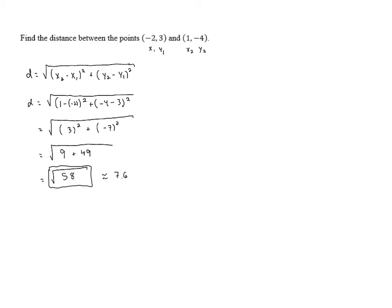Of course, the distance is greater than that. I'm just making up something on the fly. But our brains can process 7.6 more easily than the square root of 58.